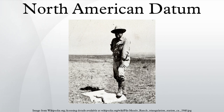The North American Datum is the datum now used to define the geodetic network in North America. A datum is a formal description of the shape of the Earth along with an anchor point for the coordinate system. In surveying, cartography, and land use planning, two North American datums are in use: the North American Datum of 1927 and the North American Datum of 1983. Both are geodetic reference systems based on slightly different assumptions and measurements.